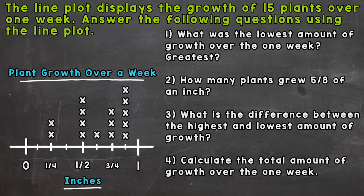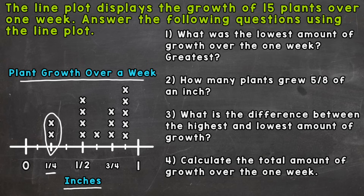Let's start with number one: what was the lowest amount of growth over the one week? How about the greatest? Let's take a look at our line plot. All of these are fractions — we don't hit on the zero or the one whole, so all of them are going to be a fraction of a whole. Let's find the lowest amount that has an x above it. Each x represents one of those 15 plants. The lowest is going to be a fourth of an inch right here.